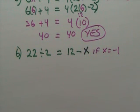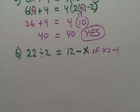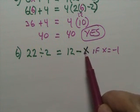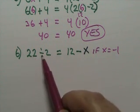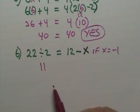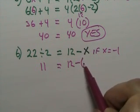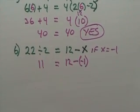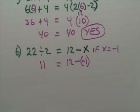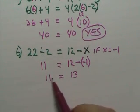Last example. 22 divided by 2 equals 12 minus x. So, and we want to know if x equals negative 1, will this work? Well, we know 22 divided by 2, half of 22. Divide by 2 means half. That's 11. On this side, we have 12 minus, now x is negative 1. Well, if that's minus negative 1, that must mean that that's a great big plus. So I'm not going to write that down, but that's a big plus. So we have 12 plus 1. 12 plus 1 is 13. So 11 equals 13?